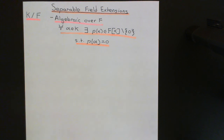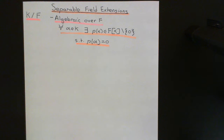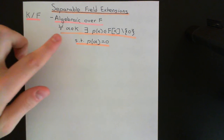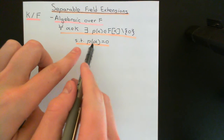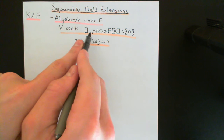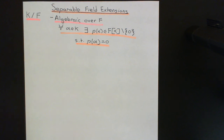So when the polynomial is evaluated at alpha using that evaluation homomorphism from the ring of polynomials over the field F into the larger field K, you get zero. That's the first criterion — algebraic over F — that this field extension must obey in order to be considered a separable field extension. But we're going to add something on top of that, otherwise the definition would be exactly the same as algebraic over F. Now, what we know is if this field extension K is algebraic over F, then for all elements alpha in that field extension K, there's going to exist a minimal polynomial for alpha over F.